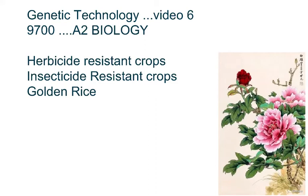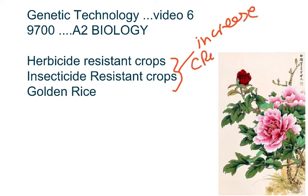We start video 6 on genetic technology for the 9700 A2 Biology syllabus. In this video we'll discuss herbicide resistant crops, insecticide resistant crops, and golden rice. The basic reason we need these is to increase crop yield — more food for people on Earth. Whether we're growing wheat, sugarcane, or corn, herbicide and insecticide resistant crops help increase that yield.